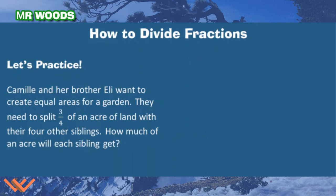Let's practice. Let's evaluate this word problem. Camille and her brother Eli want to create equal areas for a garden. They need to split 3 fourths of an acre of land with their 4 other siblings. How much of an acre will each sibling get? We know that there's Camille and her brother, and there's 4 other siblings. So there's 6 people. So there's 6 people.